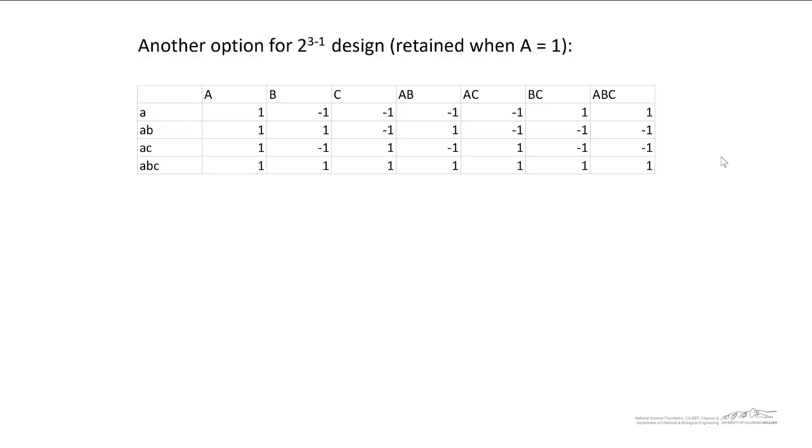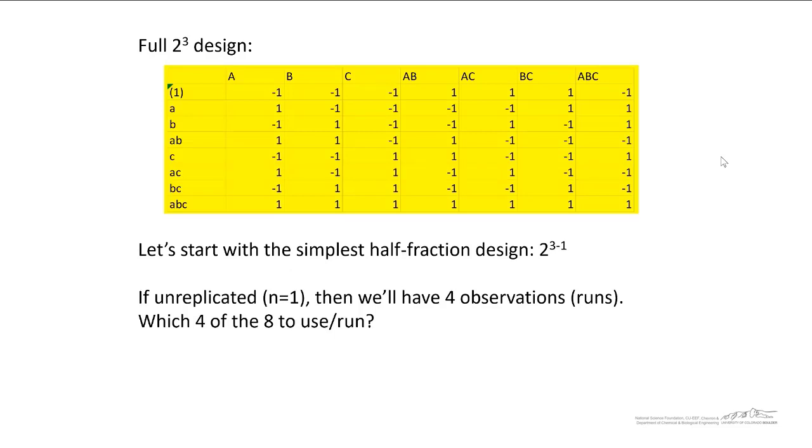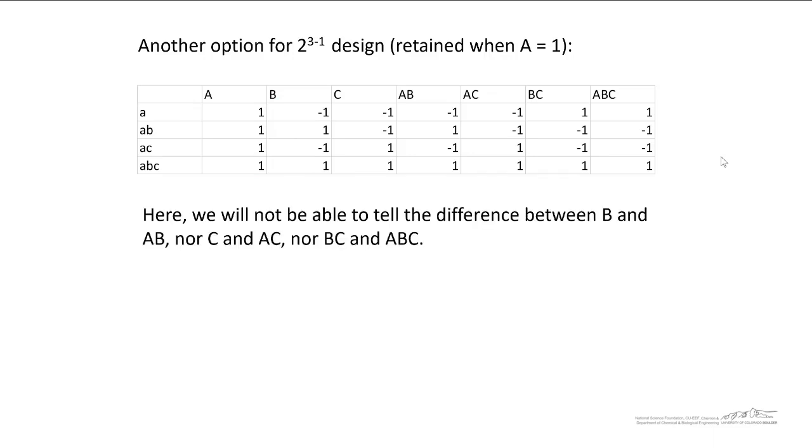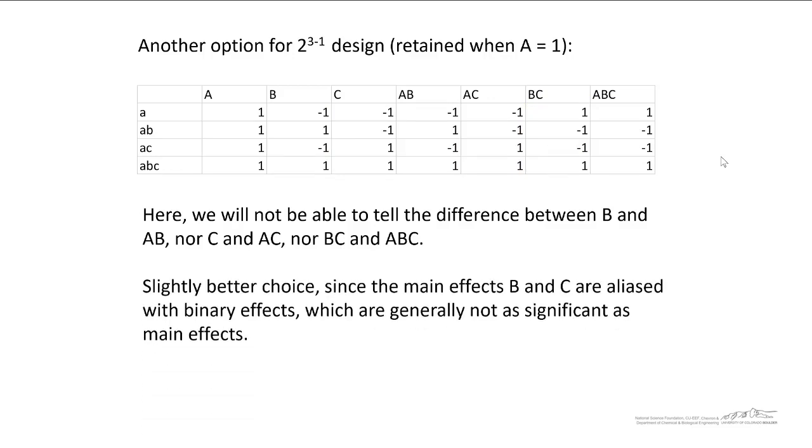Another option for the 2 to the 3 minus 1 design is if we sorted our 8 original rows. Remember, we're starting with this full 2 to the 3 design and we're trying to decide which of these four to keep. So if we sorted by the first column when A equals 1, we would retain these four treatment combinations. Here, we would not be able to tell the difference between B and AB, nor C and AC, nor BC and ABC. This is a little bit different than the previous one that I showed, since the main effects B and C are aliased with binary effects, which are generally not as significant as the main effects. So this is a little bit better, but we still have some improvements that we can make for this 2 to the 3 minus 1 design.